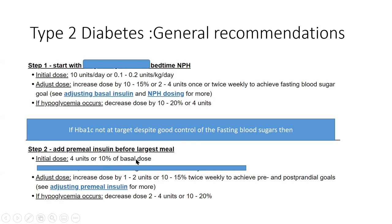The initial dose for pre-meal (short-acting) insulin is 4 units or 10% of the basal dose. To adjust: if the two-hour postprandial blood sugar is not within target (pre-meal target 4–7 mmol/L; two-hour post-meal target ~9 mmol/L, i.e., no more than ~2 mmol/L above pre-meal), increase dose by 1–2 units or 10–15% every three days. If hypoglycemia occurs, reduce dose by 2–4 units or 10–20%.